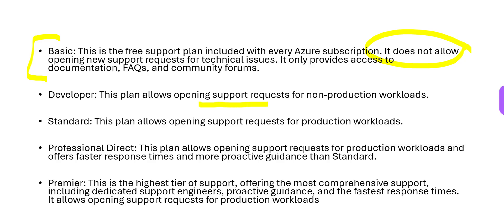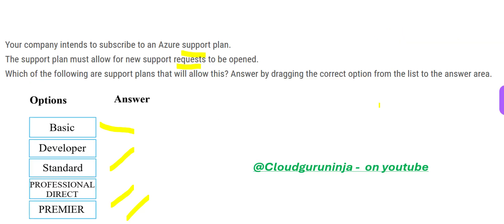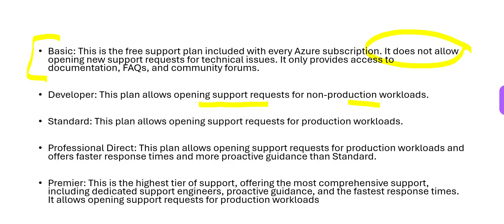Developer allows support requests for non-production workloads. Our question doesn't specify the workload, so we can assume any workload applies here. Standard helps with this request for production workloads. Professional Direct also supports production workloads and comes with faster response times and more proactive guidance compared to Standard — because you are paying more money, you get better services.